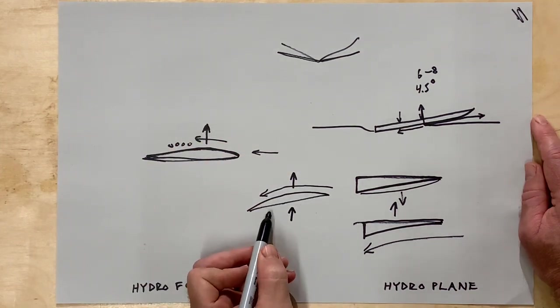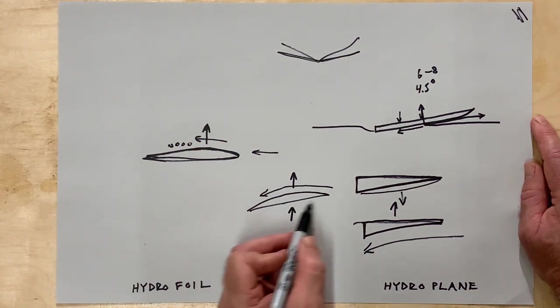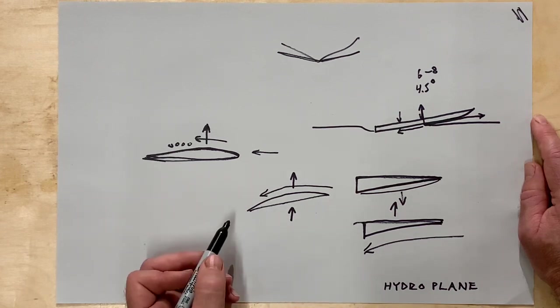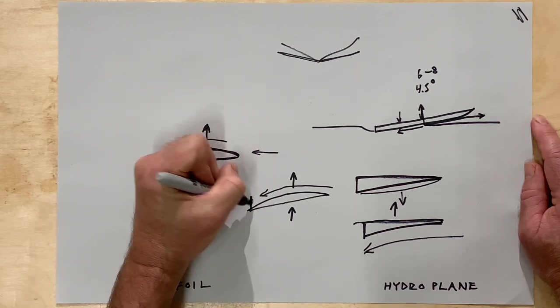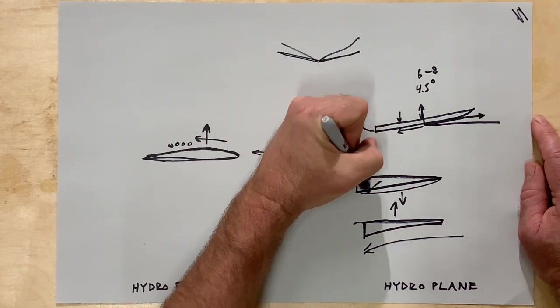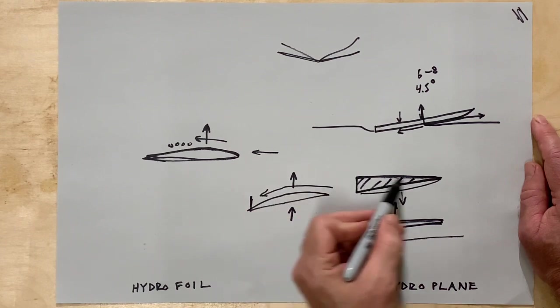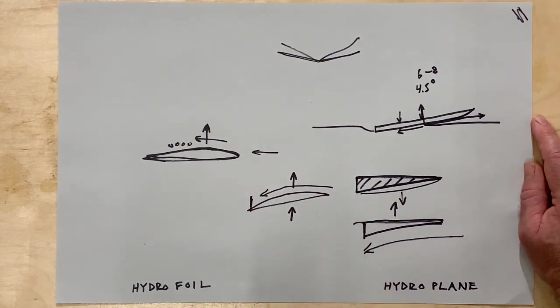So the problem with this is then you're cutting into the buoyancy. So this is all buoyancy, so that's why a wedge shape is good because it still has buoyancy even if the velocity is below hydroplaning speed.